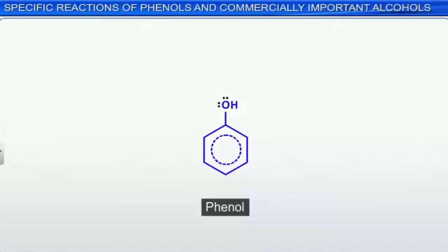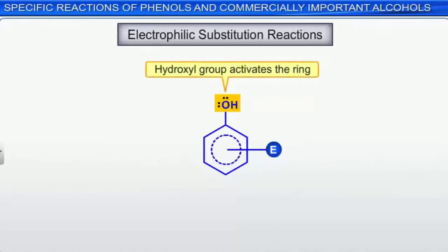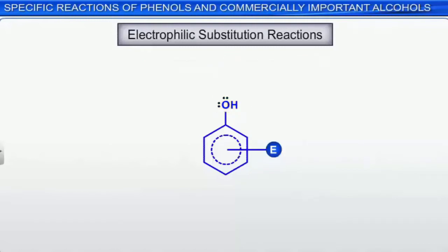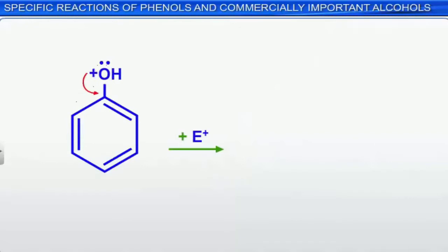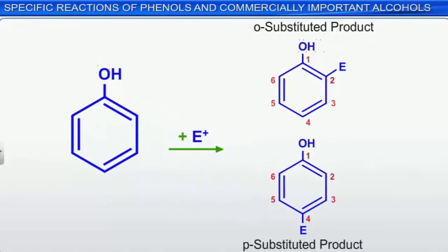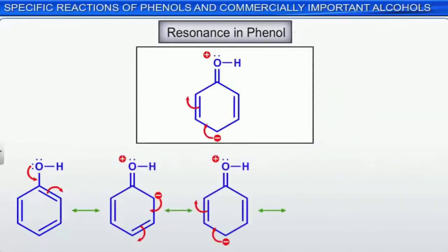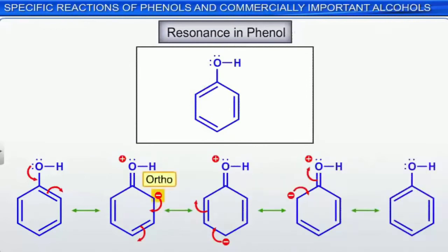Phenols, which can be thought of as substituted benzenes, can undergo electrophilic aromatic substitution. The hydroxyl group activates the ring, making phenols undergo substitution reactions more readily than benzene. The hydroxyl group is ortho-para directing because the resonance structures of phenols make the ortho and para positions electron-rich, with extra electron density at those positions.